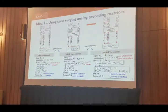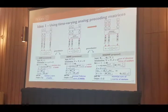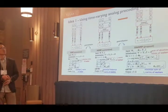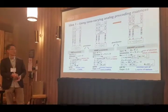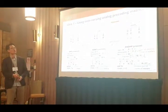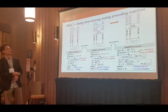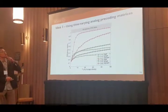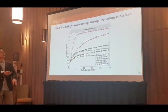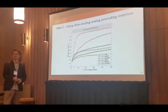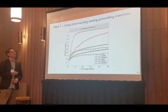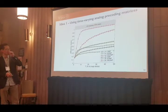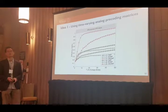In D-SOMP, the Frobenius norm is replaced by a more generalized form using the Kronecker product. This is the first idea. Looking at simulation results, with a small number of RF chains shown in blue, if the number of channel paths is 4, quite good performance is achieved. But when both the number of RF chains and the number of channel paths is 8, we can still improve further.